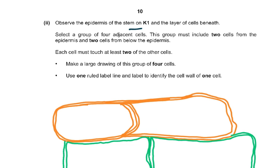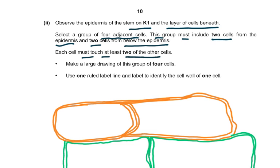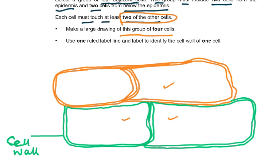The next part: observe the epidermis of the stem on K1 and the layer of cells beneath. Select a group of four adjacent cells — this group must include two cells from the epidermis and two cells from below the epidermis. Each cell must touch at least two of the other cells. Make a large drawing of this group of four cells. Use one ruled label line to identify the cell wall of one cell. This was also worth five marks.